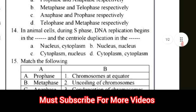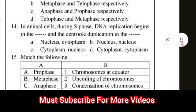Question number 14: In animal cell, during S phase, DNA replication begins in the dash and the centriole duplication in the dash. The correct answer for question number 14 is option A — nucleus and cytoplasm.